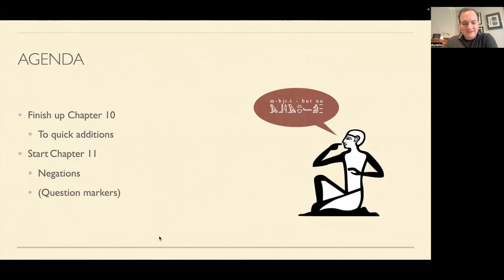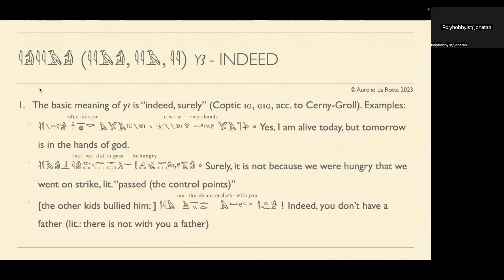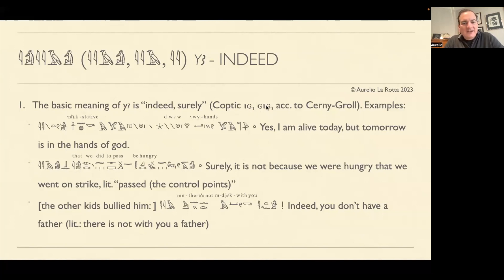Last time we spoke about the particle 'ya', and I gave two usages for it - those were the two main use cases that Nevere gives in the book. But actually there is a basic meaning we should cover. The base meaning, to my understanding of this particle, is 'indeed' or 'surely'. I also mentioned last time this particle did not survive into Coptic - that is wrong. I've since learned it actually survives as 'ye'.